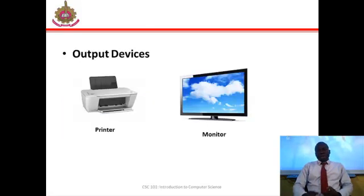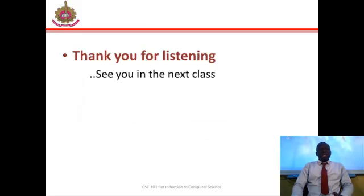Now output devices. These devices are sent output from the data processing device. It converts it into a form suitable for use by the computer's human operators. Examples include printers, monitor which is also known as the visual display unit. This is the end of the class. Thank you for listening.